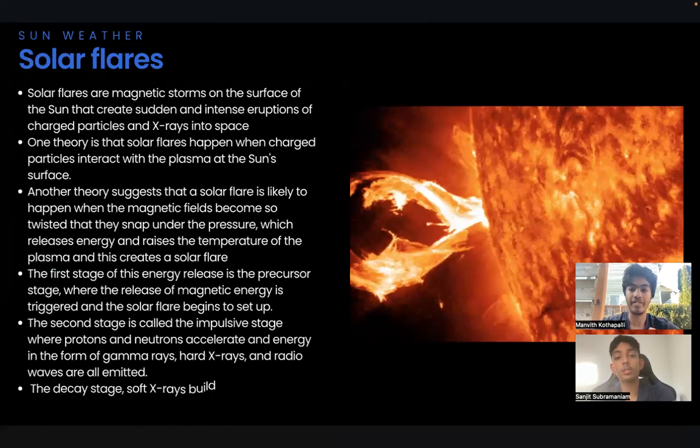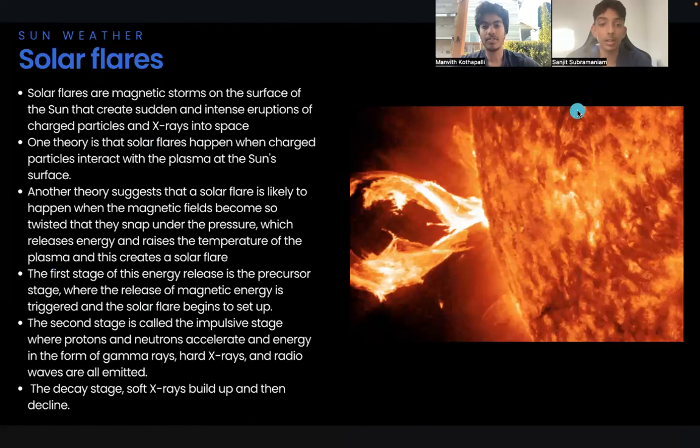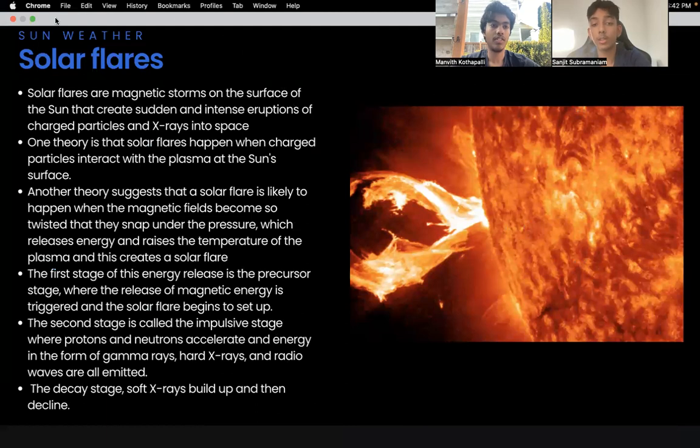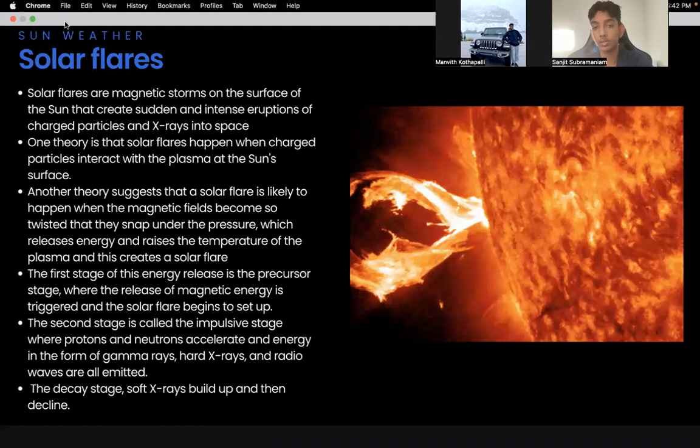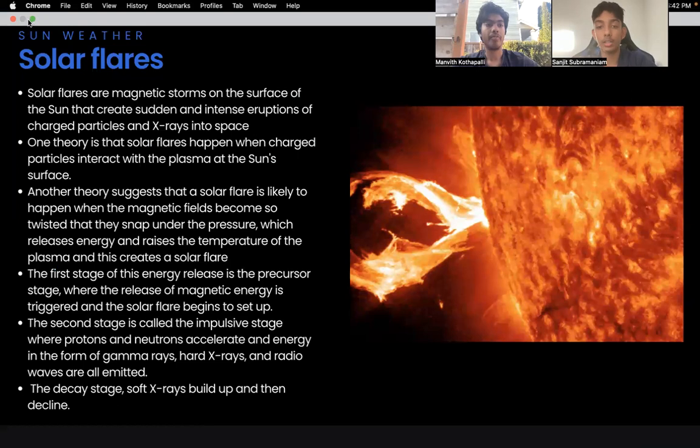First, let me talk about solar flares. Solar flares are magnetic storms on the surface of the sun that create sudden and intense eruptions of charged particles and x-rays into space. Some scientists believe that solar flares happen when charged particles interact with the plasma at the sun's surface. One theory suggests that the solar flare is likely to happen when the magnetic fields become so twisted that they snap under the pressure, which releases energy and raises the temperature of the plasma.